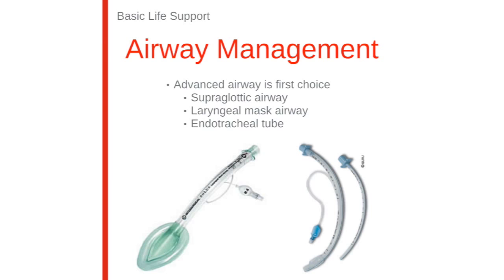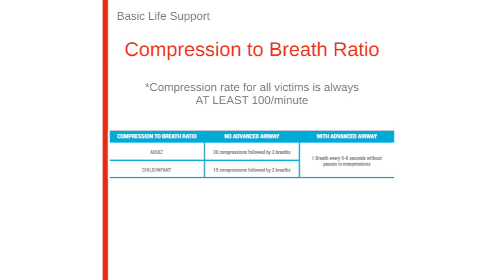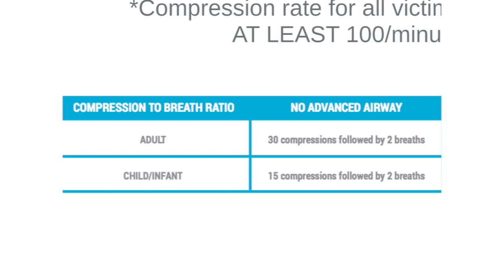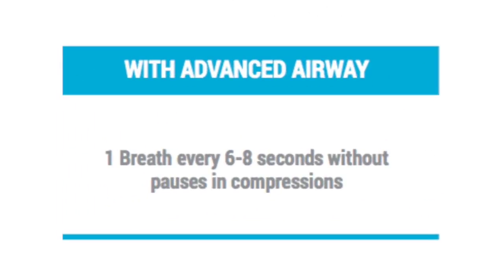When there's an advanced airway in place, the compression-to-breath ratio must be adjusted. We learned the compression-to-breath ratio for both adults and children in earlier chapters. Now we see that when an advanced airway is in place, both children and adults must receive one breath every six to eight seconds, without pauses in compressions.